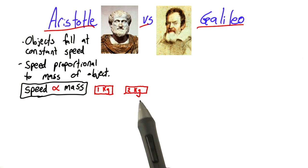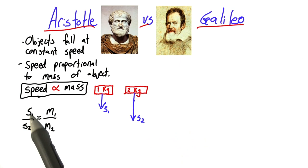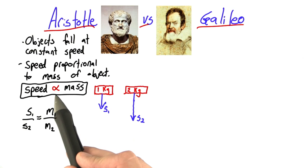So, let's say we have two objects, a 1 kilogram and a 2 kilogram mass. If this one falls with a certain speed, s1, this one will fall with the speed, s2. The way we can use this proportionality relationship to make a calculation is in the following way. We say that the ratio of speeds, s1 to s2, is equal to the ratio of masses. And we can say that because they are proportional.